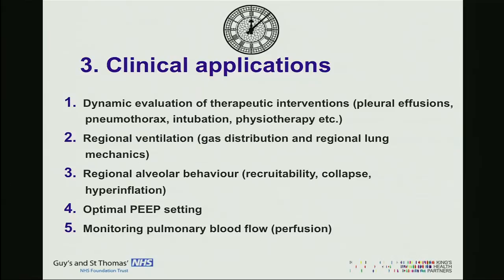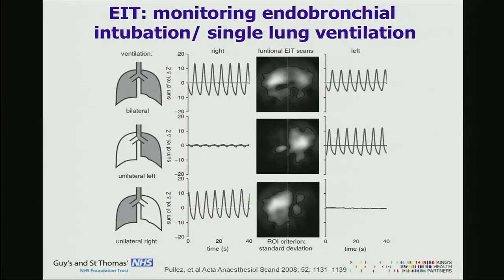This study shows how EIT could guide simple things such as intubation or the insertion of a double lumen tube. You can see here the tube correctly placed — we have ventilation on the right and left, and the image is symmetrical on both sides. This is either a misplaced tube or a correctly placed double lumen tube on the left — we can perfectly isolate the left from the right and vice versa. This can be an important monitoring tool during such procedures.